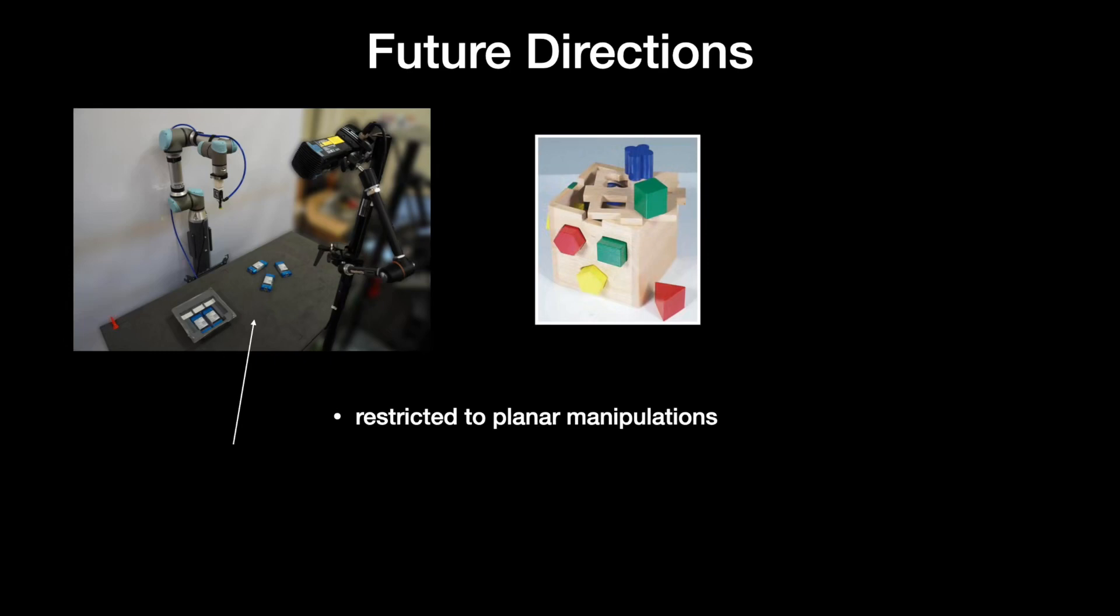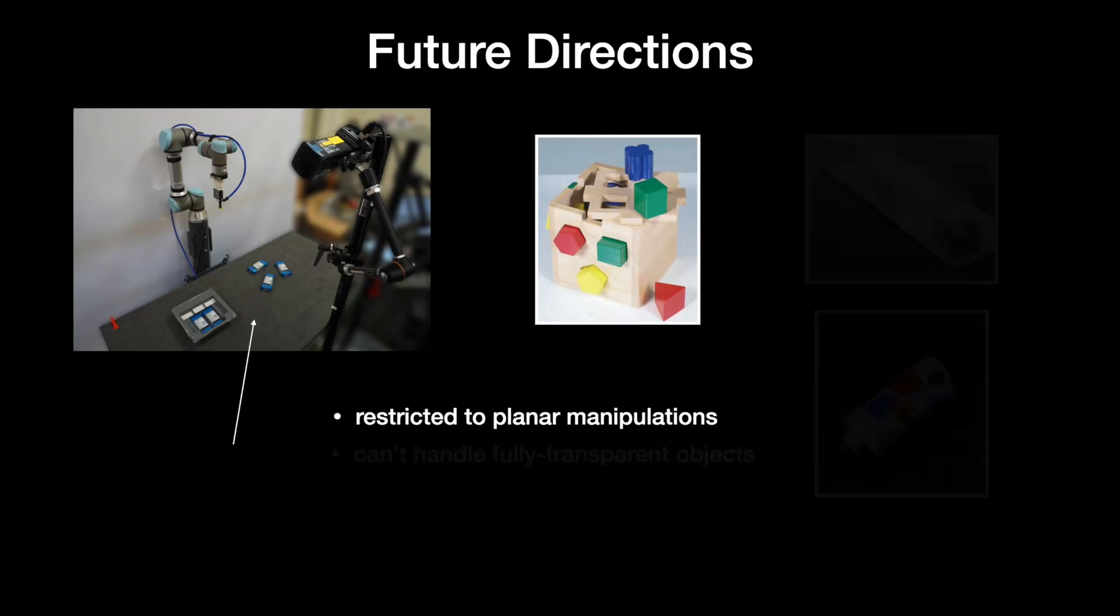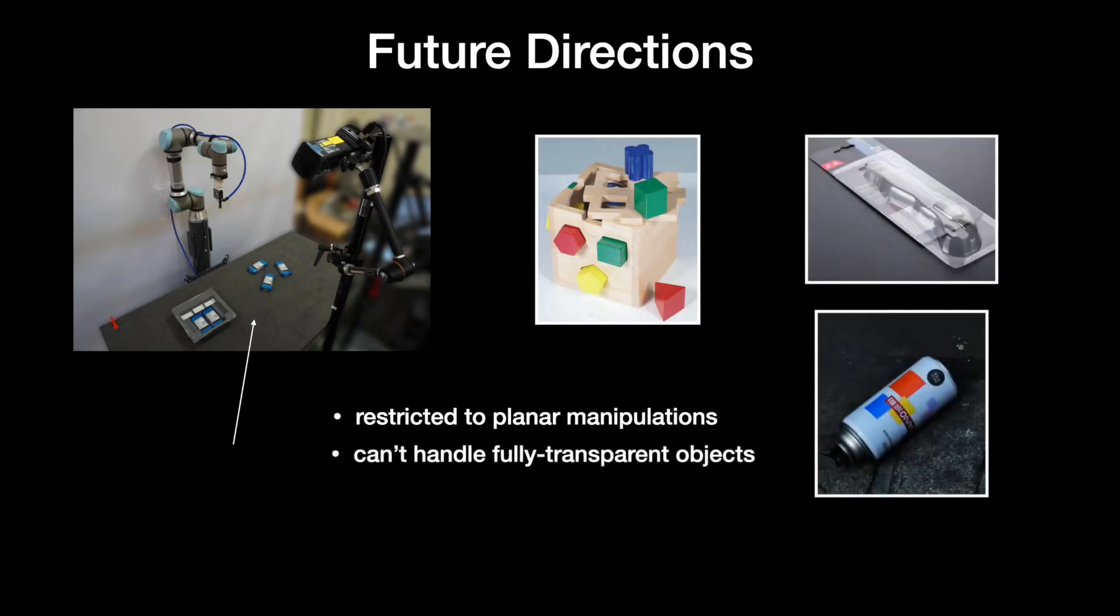Second, while our system is able to handle partially transparent kits, it has trouble handling fully transparent ones like the deodorant blister pack, which is why we spray painted it. Exploring the use of depth prediction networks to estimate the geometry of transparent kits before using the visual data would be a promising direction for future research.